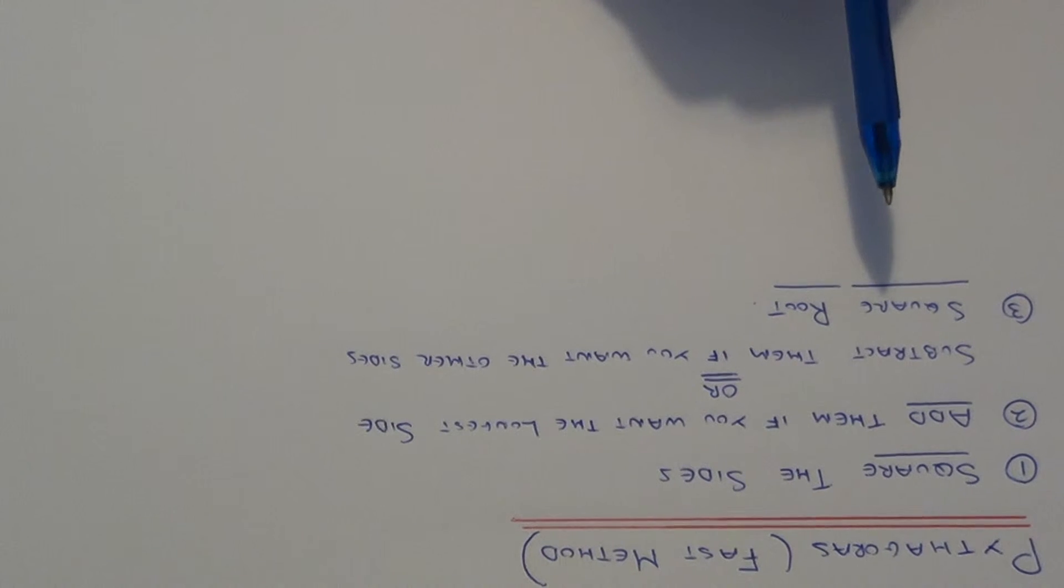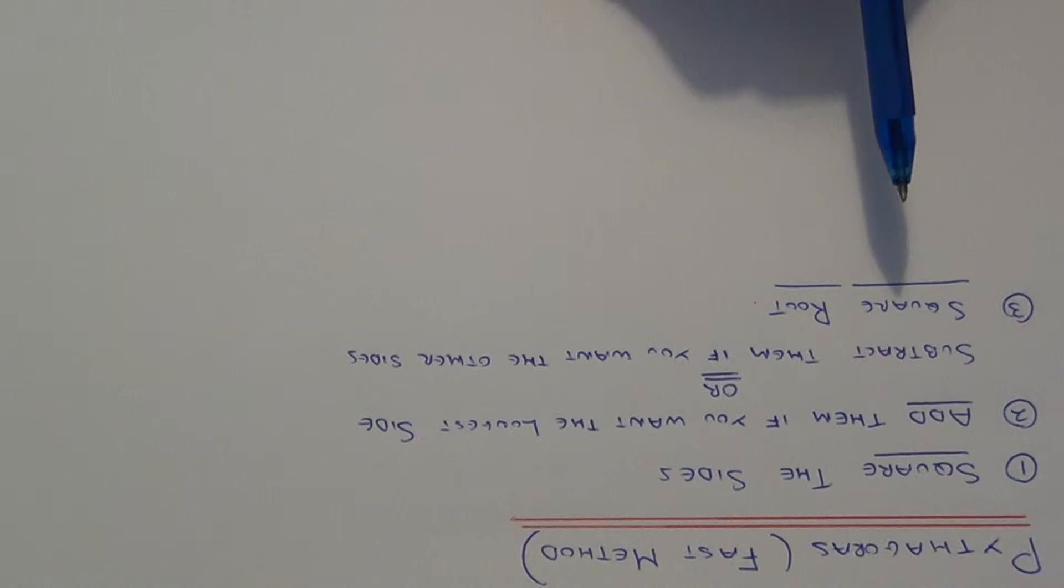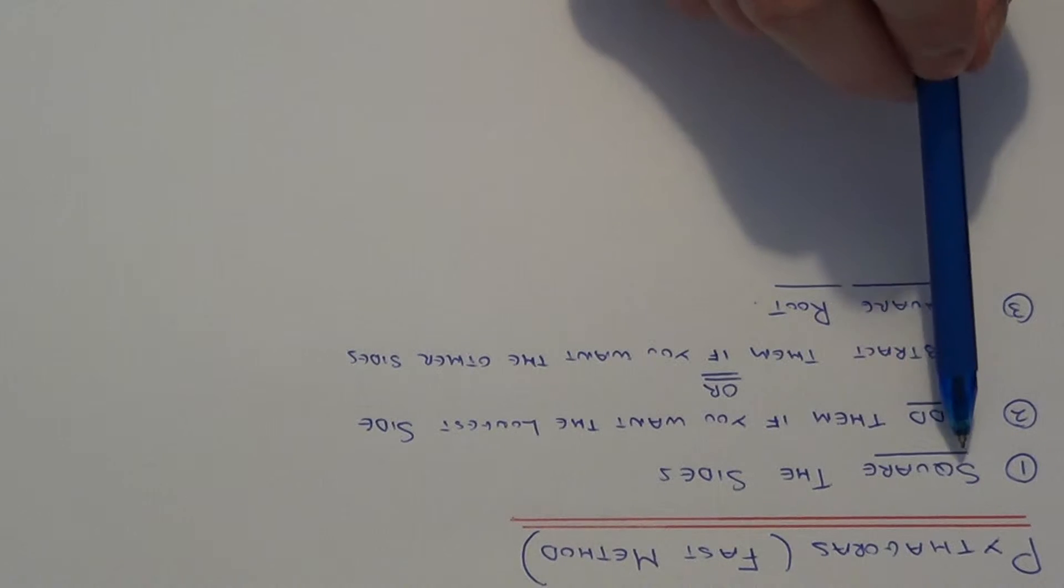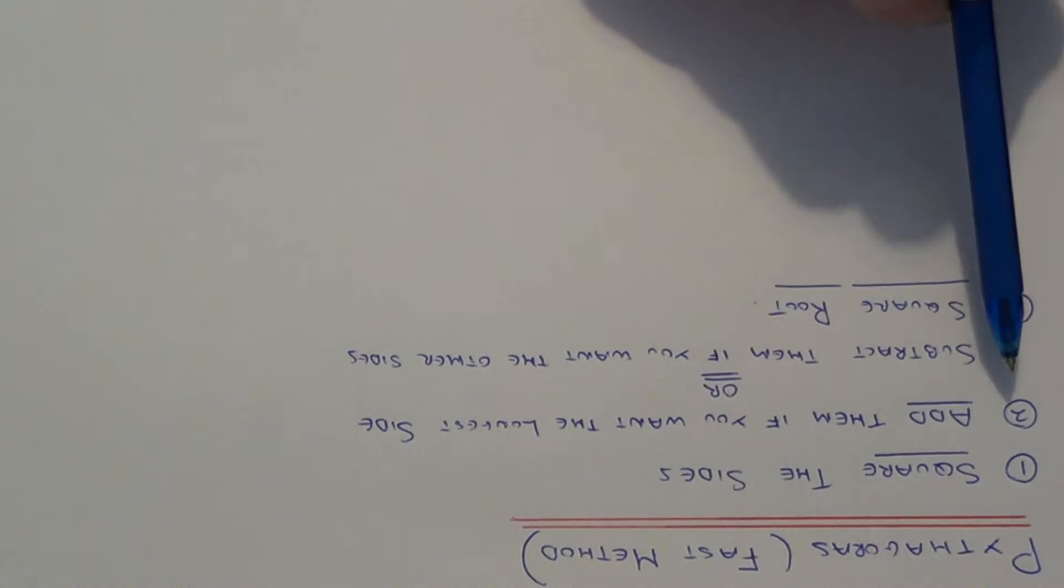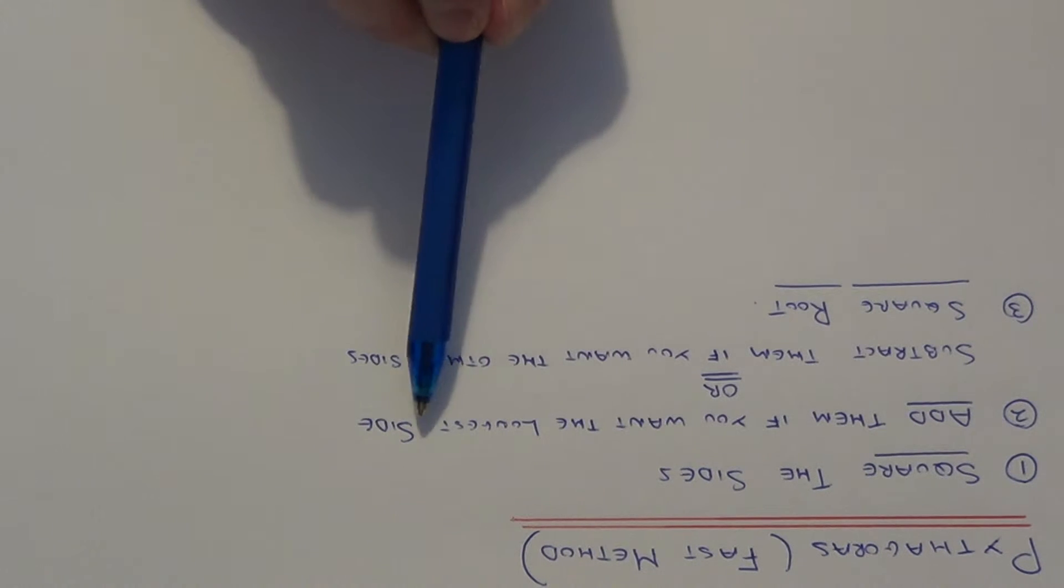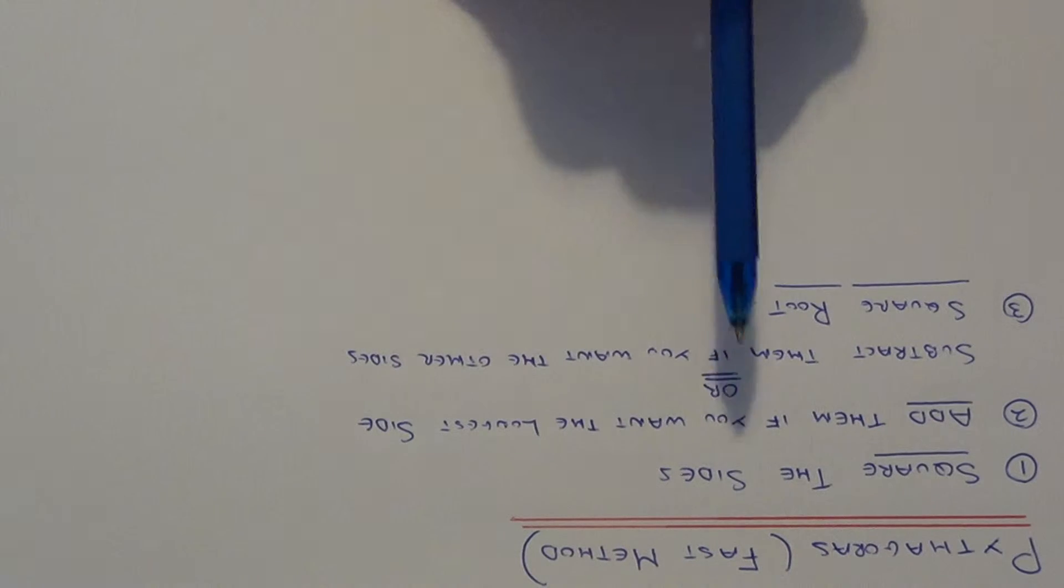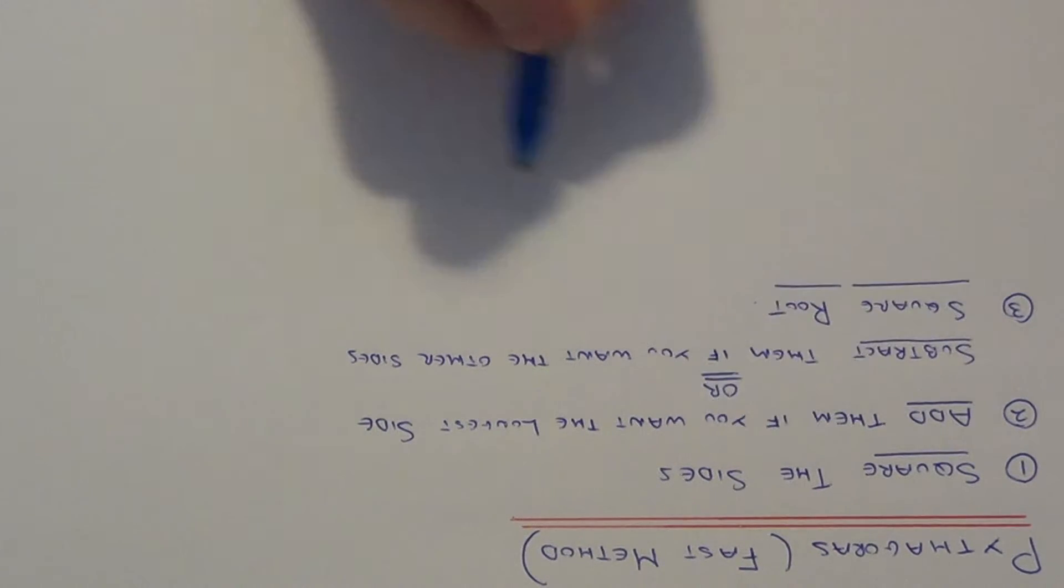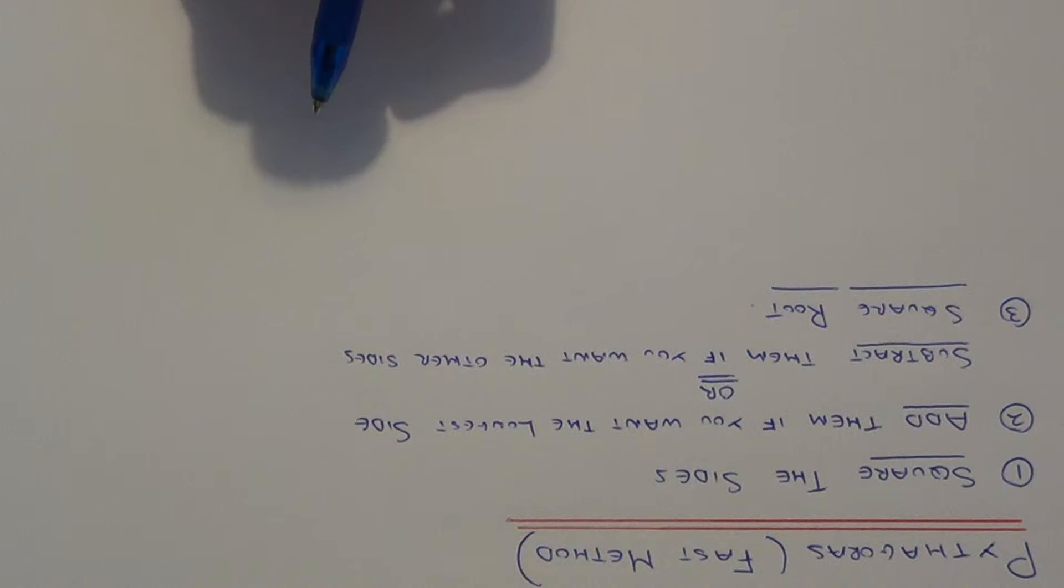Today I want to show you a quick method to work out Pythagoras. First of all, what you need to do is square the two sides which you are given. The second step is you add the squares together if you are finding the longest side. Or if you are finding the shorter side, you need to subtract the squares.